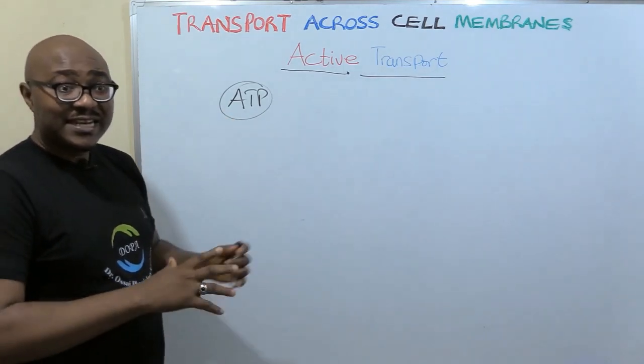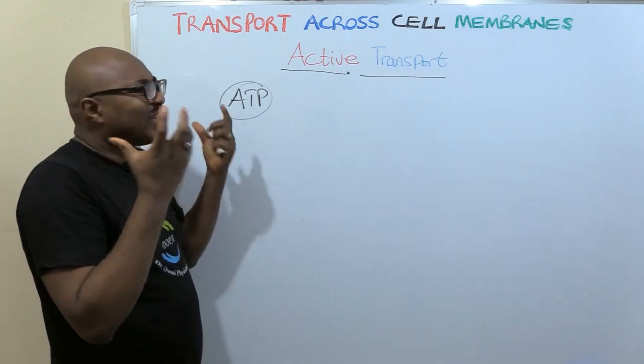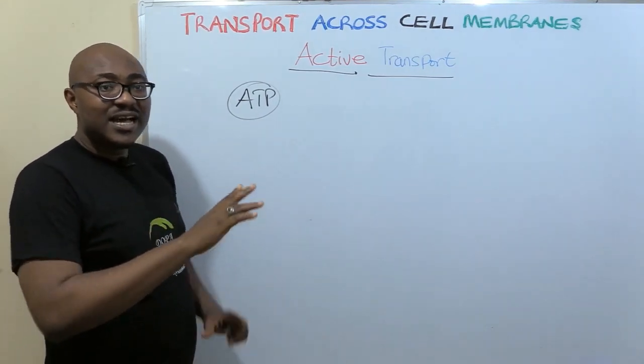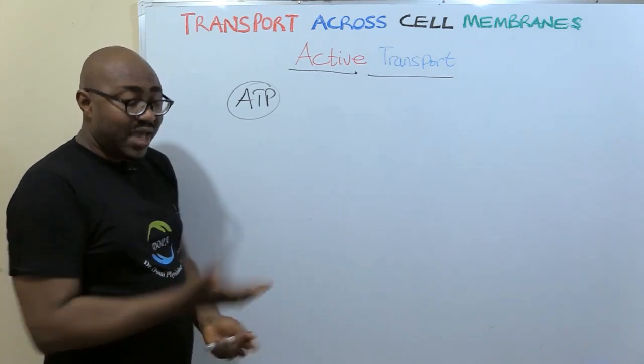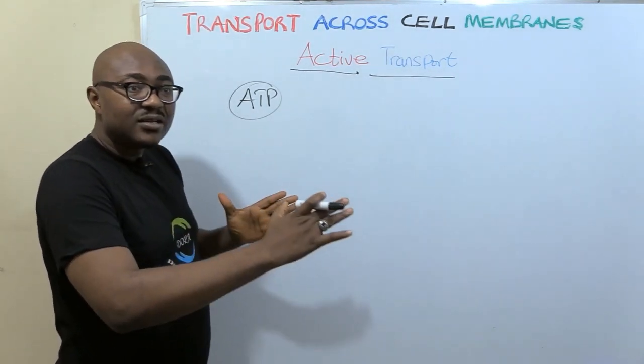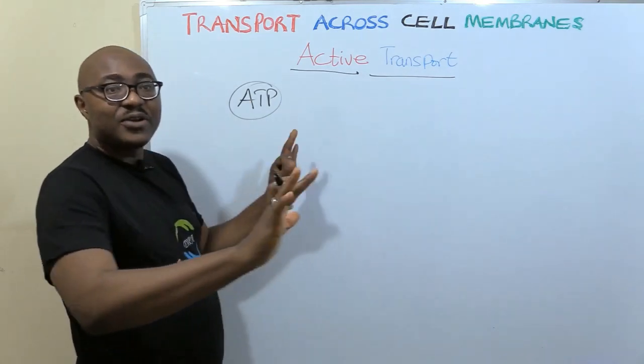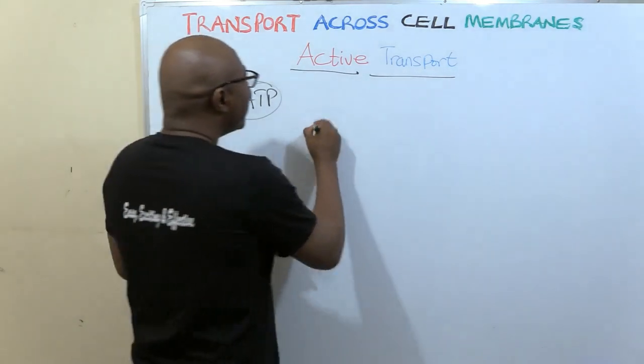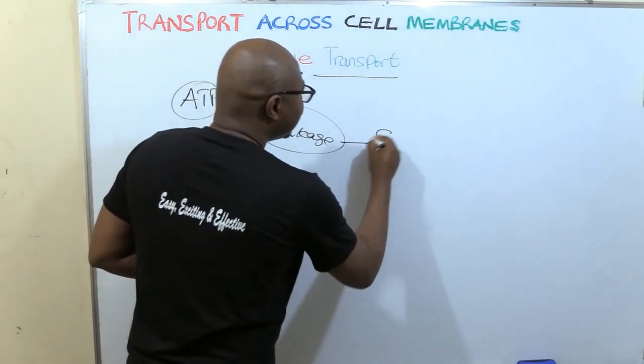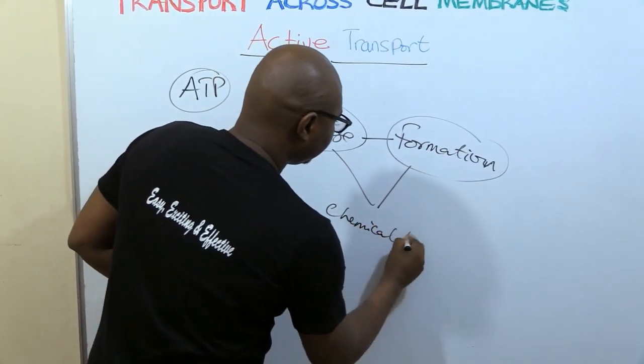Now ATP is the energy currency of the cell. What exactly is energy? Because sometimes you can get so philosophical and abstract about this energy thing. In the real sense of the word, energy has to do with attraction. Everything about energy is attraction, force of attraction, in the breaking of chemical bonds and the formation of chemical bonds.